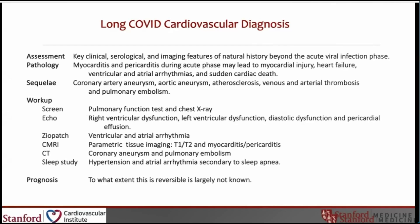Workup consisted of the following: to screen patients initially, pulmonary function tests and chest X-ray are performed. Subsequently, echocardiography is performed to look for right ventricular dysfunction, left ventricular dysfunction, diastolic dysfunction, and pericardial effusion. Holter patches assess for ventricular and atrial arrhythmia. Cardiac MRI assesses parametric tissue imaging, looking at T1 and T2 characteristics for myocarditis and pericarditis. CT is done to assess coronary aneurysm and pulmonary embolism, and a sleep study is done to assess hypertension and atrial arrhythmia secondary to sleep apnea.